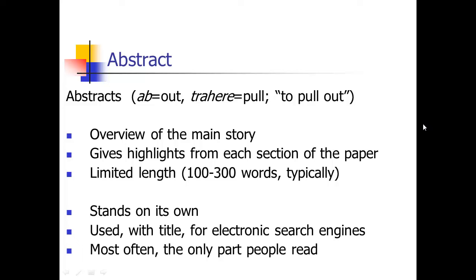I'm often scanning abstracts on PubMed for things I want to write about for a general audience. If I get to an abstract and it doesn't look important or interesting, I might not end up writing about it. So you've got to say in the abstract why your research is important and interesting — why should people care?